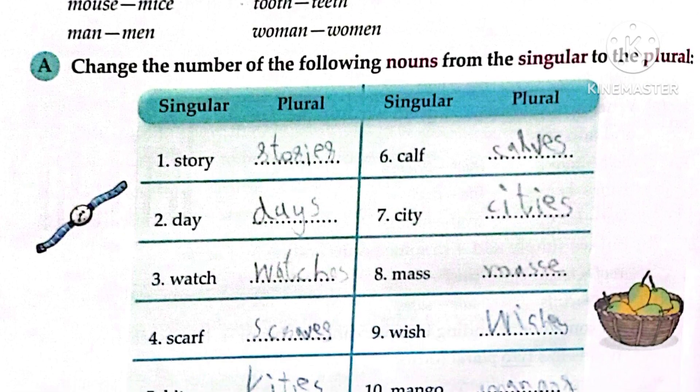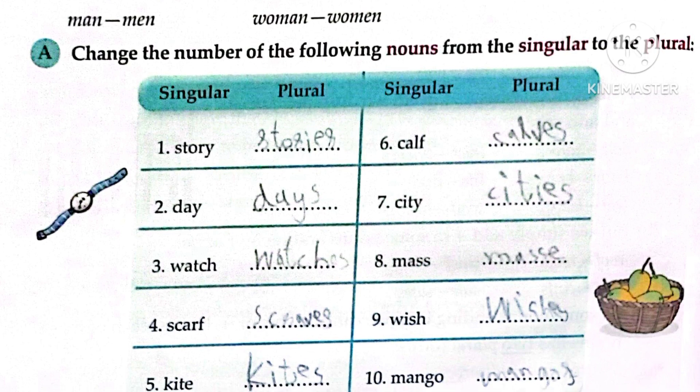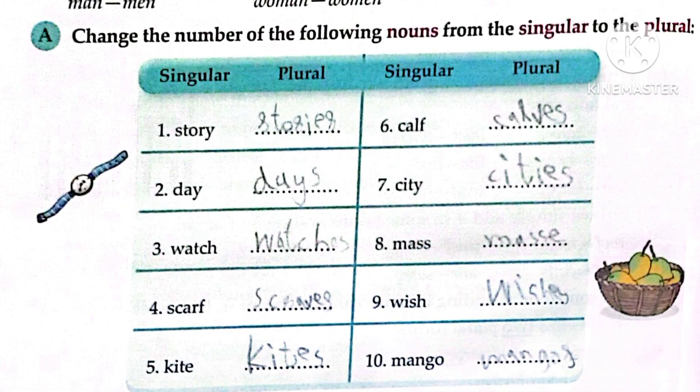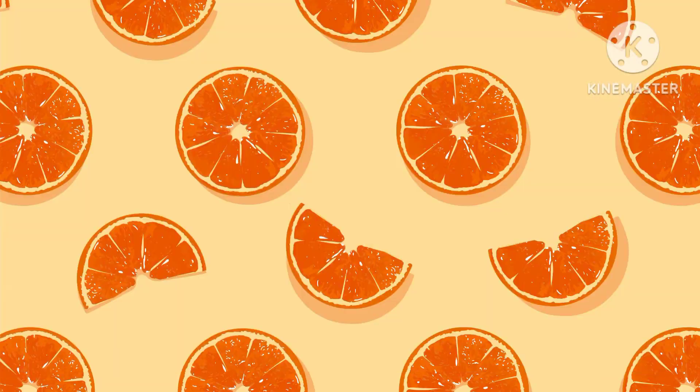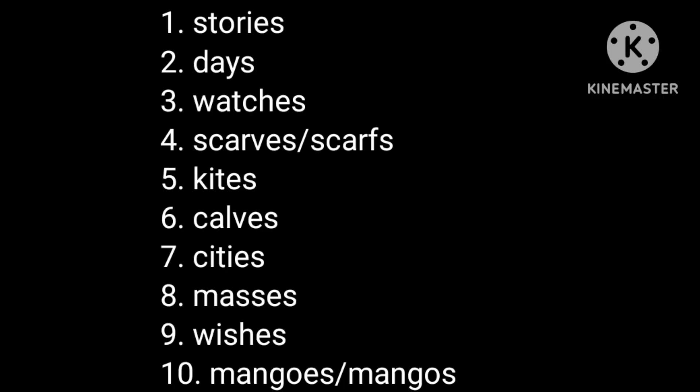The first exercise is A: change the number of the following nouns from singular to plural. The words given are: story, day, watch, scarf, kite, car, city, mass, wish, and mango. Following the rules we have studied: 1. stories, 2. days, 3. watches, 4. scarves or scarfs, 5. kites, 6. cars, 7. cities, 8. masses, 9. wishes, 10. mangos or mangoes — both forms are correct.